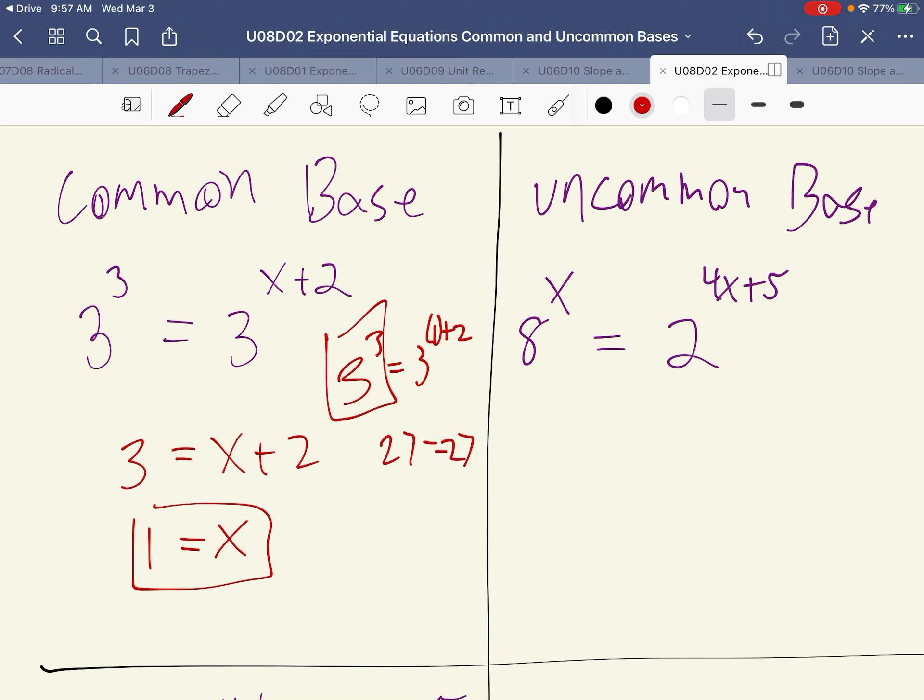And we get 27 equals 27. We didn't even need to do that. Just the fact that we're going to have 3 to the 3rd and 3 to the 3rd should be more than enough information to prove that. So really, what we're trying to do is, once we have a common base, we can just set the exponents equal to each other and solve.